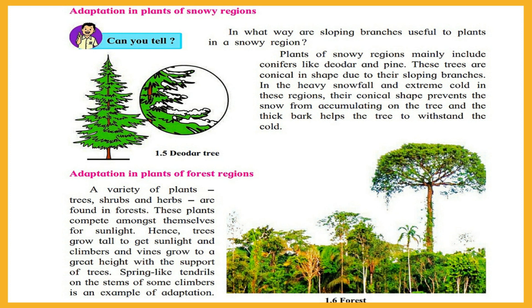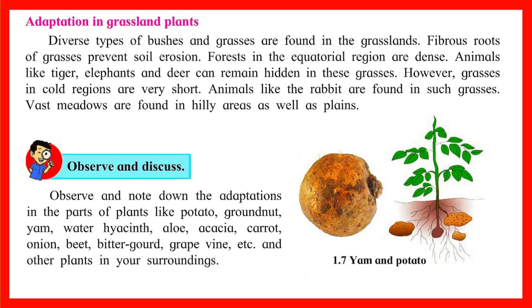Plants of forest regions compete amongst themselves for sunlight. Hence, trees grow tall to get sunlight, and climbers and vines grow to a great height with the support of trees. Spring-like tendrils on the stems of some climbers are an example of adaptation.